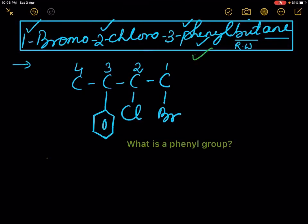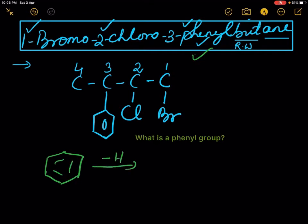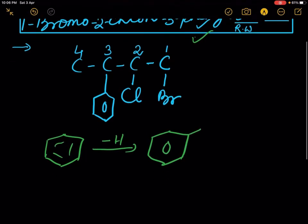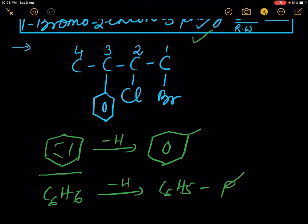When one H atom from the Benzene ring is removed, a Phenyl group is formed. The formula of Benzene is C6H6. After removal of one H, you get C6H5. This group is known as Phenyl.